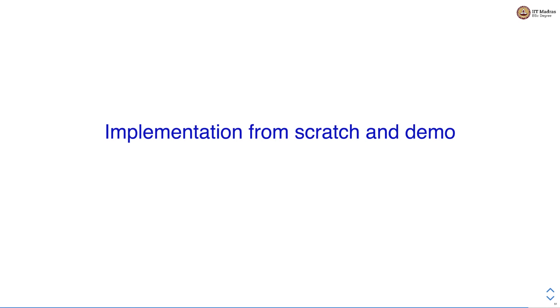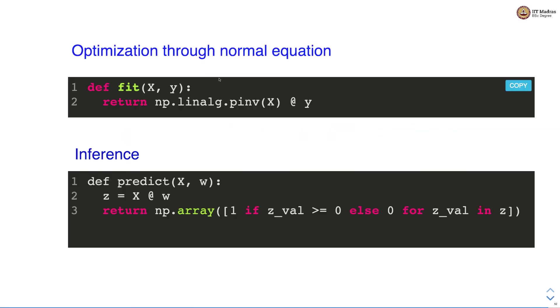Let us implement a couple of functions for least square classification from scratch and look at the demo on a sample dataset. We implement two functions: one for optimization through the normal equation and the second is the inference function. The normal equation is implemented with a fit method that takes two arguments — a feature matrix X and a label vector Y. We calculate the pseudo-inverse of the feature matrix and perform matrix multiplication between the pseudo-inverse and the label vector to obtain the optimal weight vector.